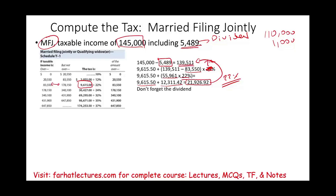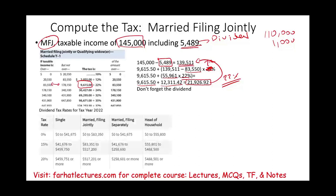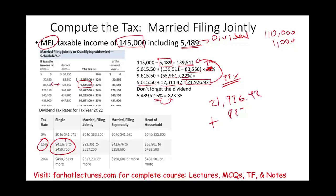Don't forget about the dividend — we have $5,489 in dividends subject to preferential tax treatment. This individual's taxable income falls in the 15% dividend tax bracket. So $5,489 × 15% = $823.35. The total tax is $21,926.92 plus $823.35, which gives us $22,750.27 as the total tax.